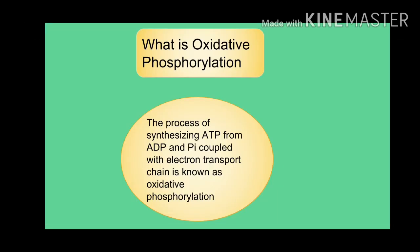So what is oxidative phosphorylation? The simple definition would be: the process of synthesizing ATP from ADP and inorganic phosphate, coupled with the electron transport chain, is known as oxidative phosphorylation. It is difficult to understand oxidative phosphorylation by this simple definition alone, which is why the chemiosmotic hypothesis came about.